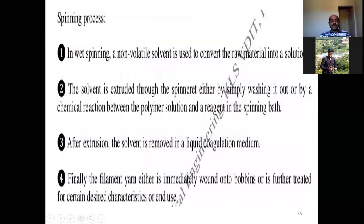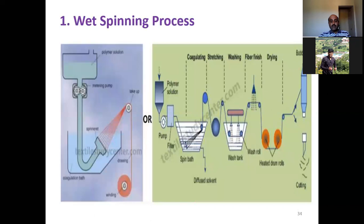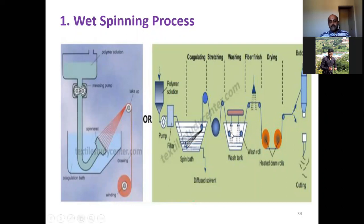Finally, the filament yarn is either immediately wound onto bobbins or further treated for certain desired characteristics — such as washing in a wash pan, fiber finishing with spraying, or other post-processing treatments required for different applications and end uses.